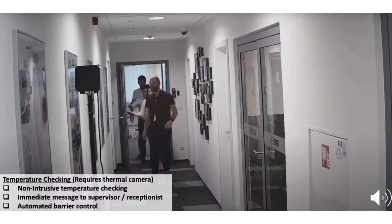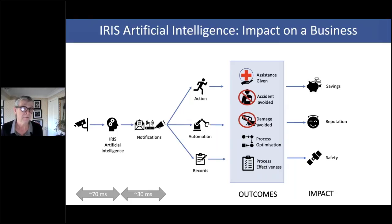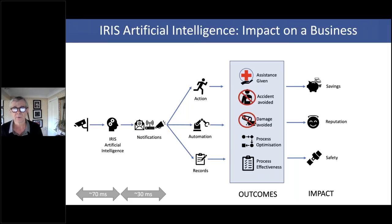The third COVID-related area is temperature checks — if you have a thermal camera, that can be integrated. I'll go through the remaining use cases verbally: for machine guarding, we can detect very quickly from the CCTV feed whether something is happening — within about 70 milliseconds of an event occurring.